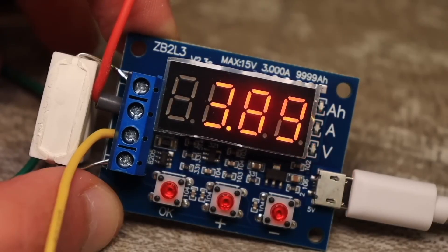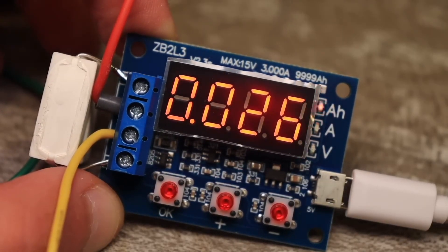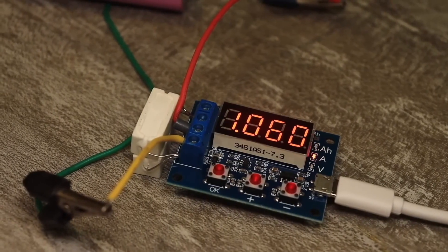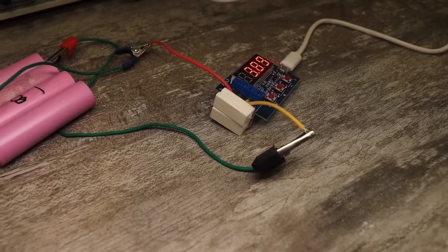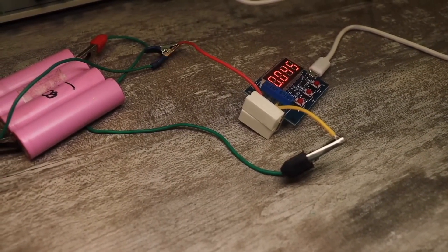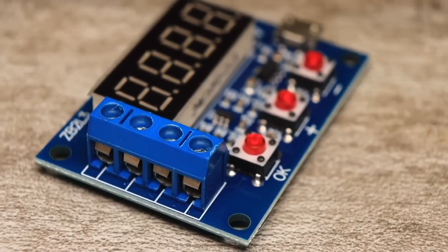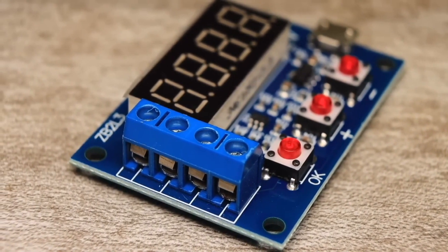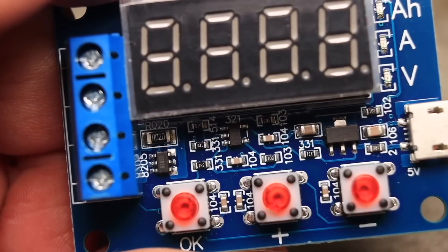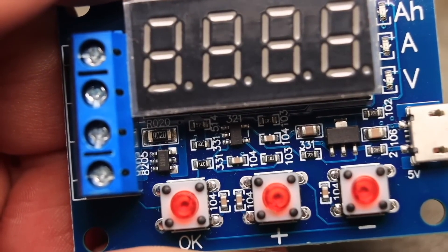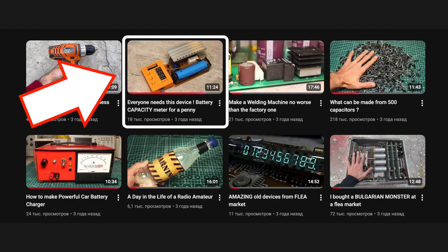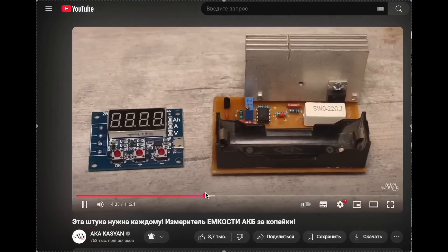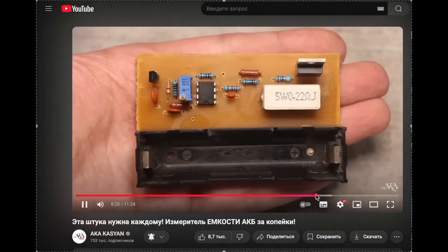Here is a seven-segment display that shows the discharge current, the voltage on the battery, and the capacity delivered at that moment. When the discharge is finished, the total delivered capacity is displayed on the screen. This is certainly convenient, but there are a few buts. The device is not a current stabilizer. The set current value will decrease as the battery discharges. In this video, I showed how to add a current stabilizer to this meter and create a full-fledged discharger.